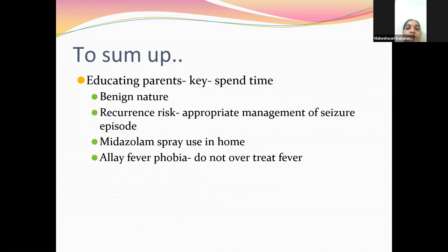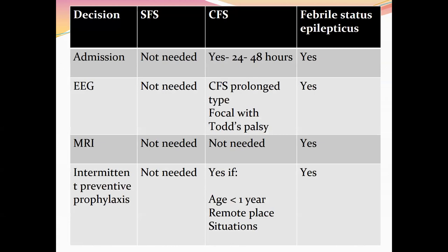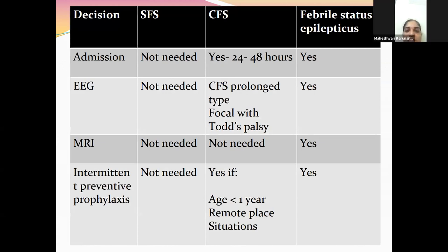Educate parents regarding the benign nature, recurrence risk, how to use midazolam nasal spray at home, and how not to overtreat fever — allay fever phobia. Finally: for simple febrile seizures, admission is not needed, monitoring is sufficient, EEG and MRI and intermittent preventive prophylaxis are not needed unless seizures are recurrent — more than four per year. For complex febrile seizures, admit for minimum 24 to 48 hours; EEG if prolonged with Todd's palsy; MRI not needed; intermittent prophylaxis if child is less than one year. For febrile status epilepticus, definitely admit, always do EEG and MRI, and intermittent prophylaxis must be started.